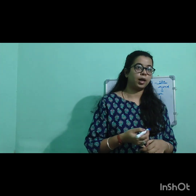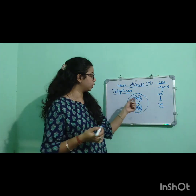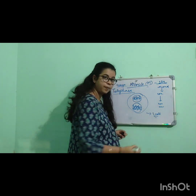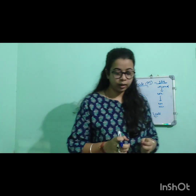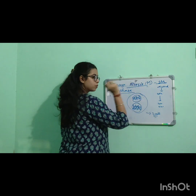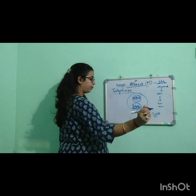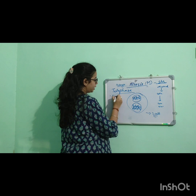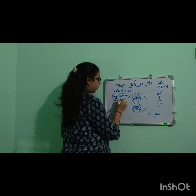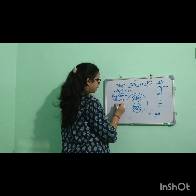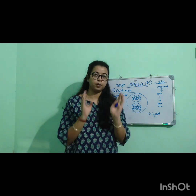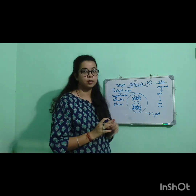The cell continues to elongate so that the two cells will be separated out, giving us the two daughter cells. The degradation of the spindle fiber also takes place — till anaphase the spindle fiber remains, but by the end of telophase the spindle fiber will be completely degraded. All the things which had disappeared will regain back.